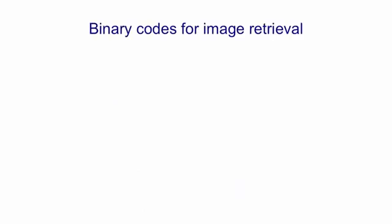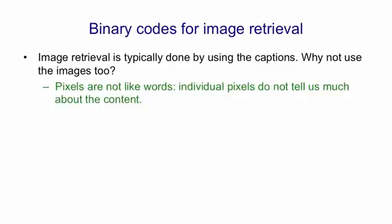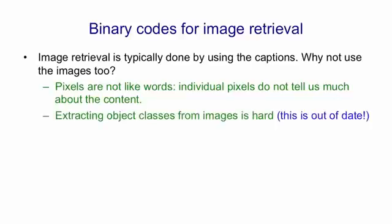Now we're going to look at using binary codes for image retrieval. Image retrieval at present is typically done using the captions. But why not use the images too? They obviously contain a lot more information than the captions. The basic problem is that pixels are not like words. Individual pixels don't tell us much about the content of an image. Obviously, if we could recognise the objects in the images, then we'd have things that were much more like words.